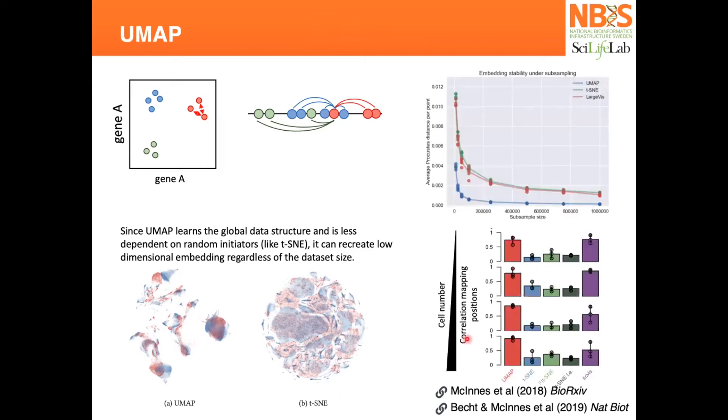For t-SNE, the embedding will not overlay at all because it's very stochastic. In UMAP, since you calculate and have exactly the same mechanism to generate the projection, the embedding of the cells will be fairly similar. UMAP will have kind of the same visualization, and that's good for reproducibility.